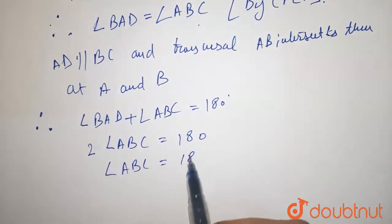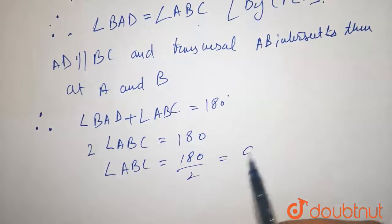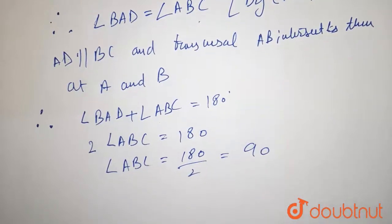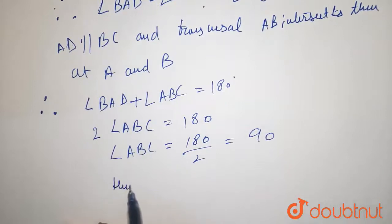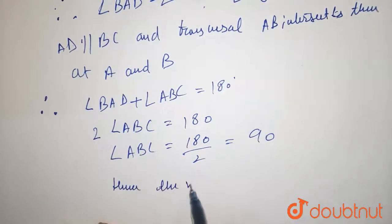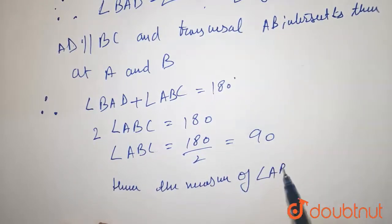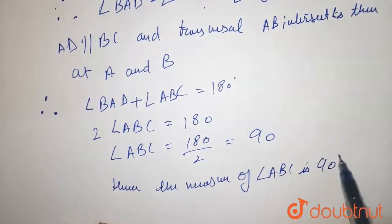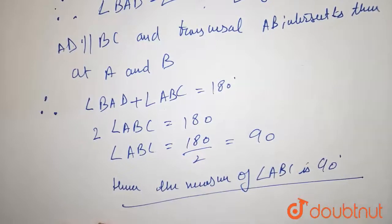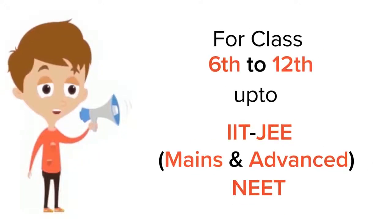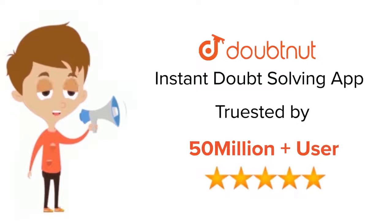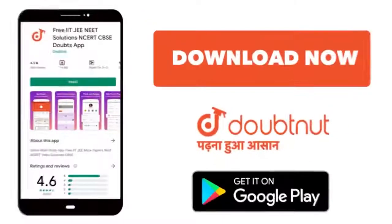that is equal to 90 degrees. Hence, the measure of angle ABC is 90 degrees, and this is our required answer. For class 6th to 12th up to IIT-JEE and NEET level, trusted by more than 5 crore students, download Doubtnet app today.